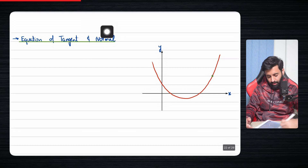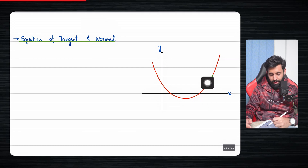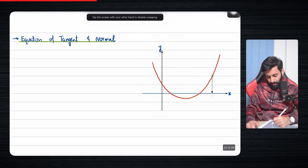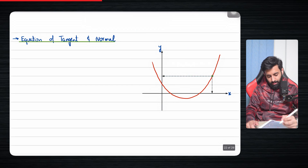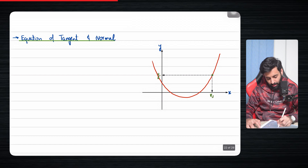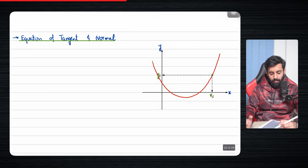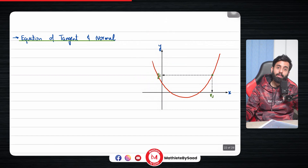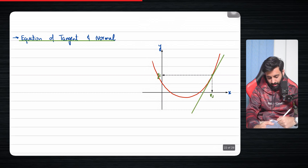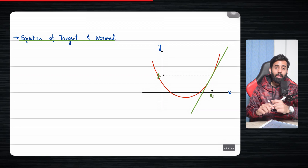Let's say you have this curve and you want to find the equation of the tangent at a point marked on it. Let's say the coordinates of this point are x1 and y1 — so the x-coordinate is x1 and the y-coordinate is y1. From prior knowledge, you should know what a tangent looks like: it's basically a line that touches a curve at just one point.